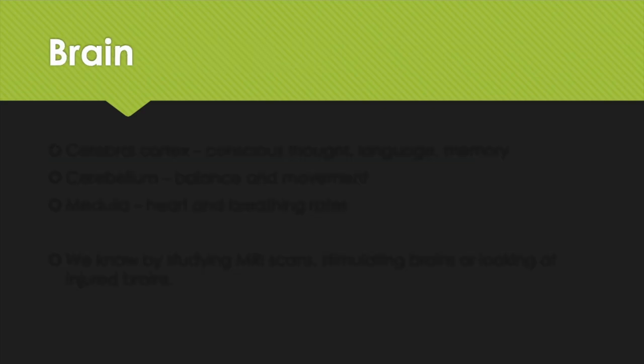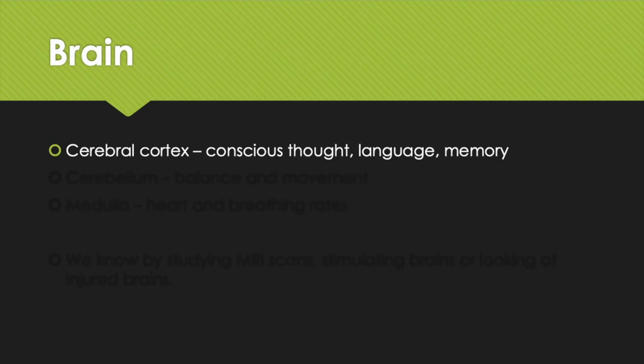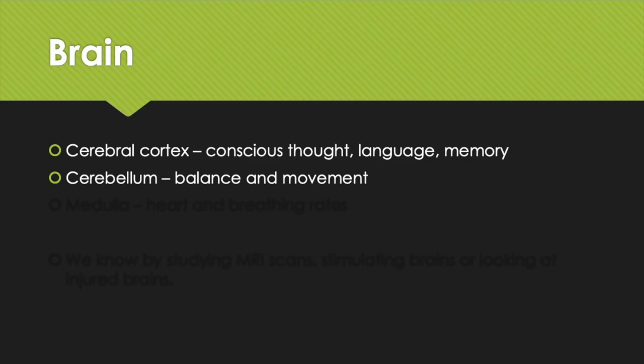The brain: you need to know about three parts. First is the cerebral cortex — that's the part of your brain that does the clever thinking, conscious thought, language, memory, that kind of stuff. You also need to know about the cerebellum, which is important for balance and movement. If you had a problem with your cerebellum, you'd be falling over all the time.